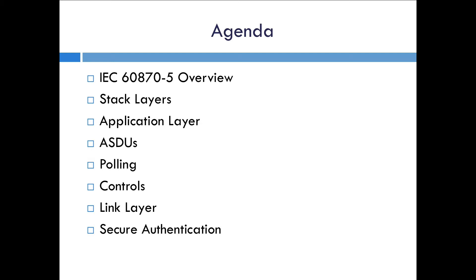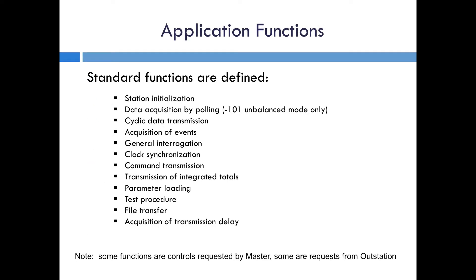Let's dig in and look in a little more detail at the application layer. Within the application layer, the standard identifies something known as application functions. These are basically the requests which can be sent either from the master or the outstation. There's an initialization sequence which the master controls, and data acquisition by polling — though that's a little misleading because this is just for 101 unbalanced mode. The other common ways for the outstation to send data are through cyclic data transmission, which is for static data, and acquisition of events, which is for sending event data or data changes. And then there's the general interrogation that we briefly talked about before.